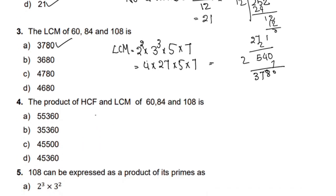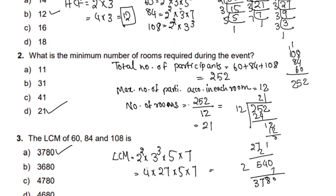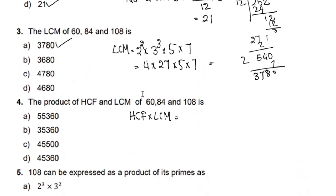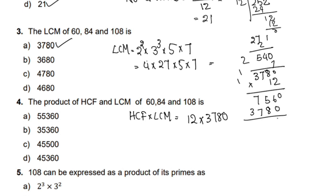The product of HCF and LCM of 60, 84 and 108: HCF × LCM = 12 × 3780 = 45,360. Computing: 3780 × 12 — 8 twos are 16, 7 twos are 14 plus 1 is 15, 3 twos are 6 plus 1 is 7; then adding the partial products gives 45,360.